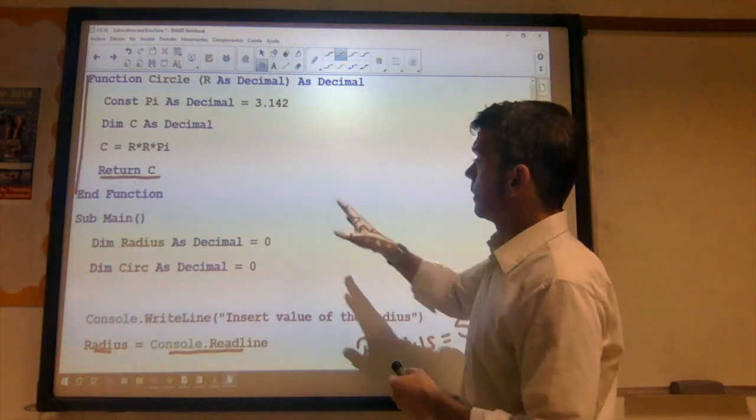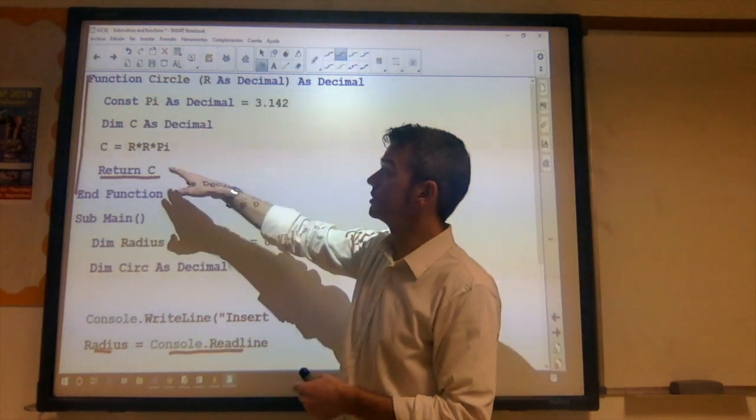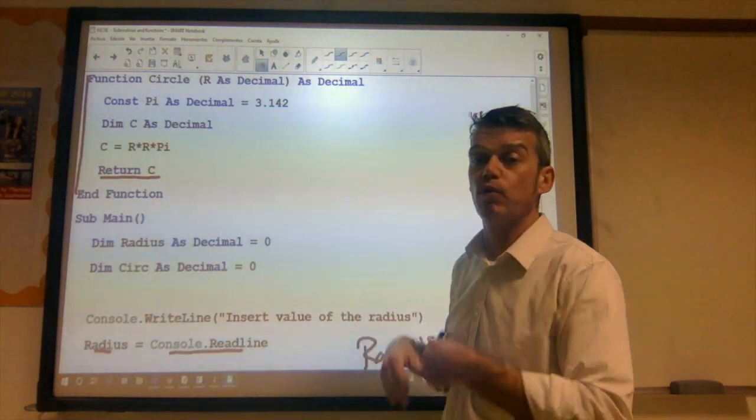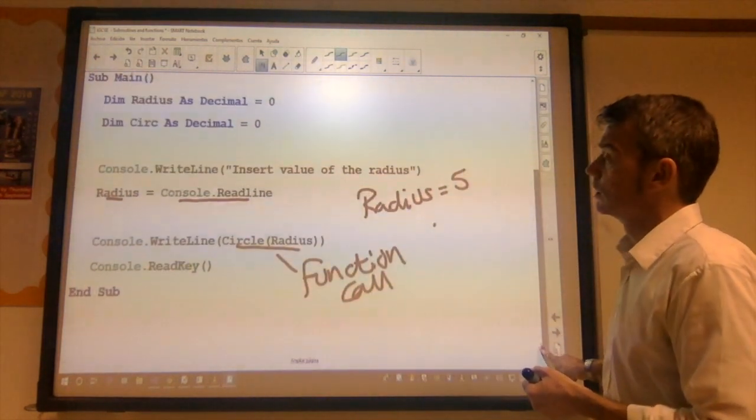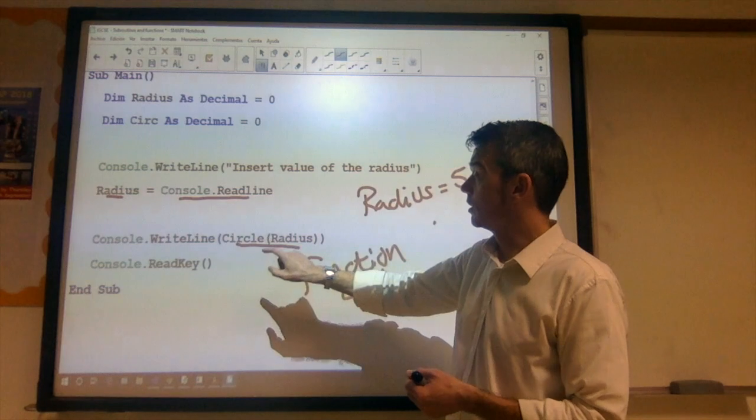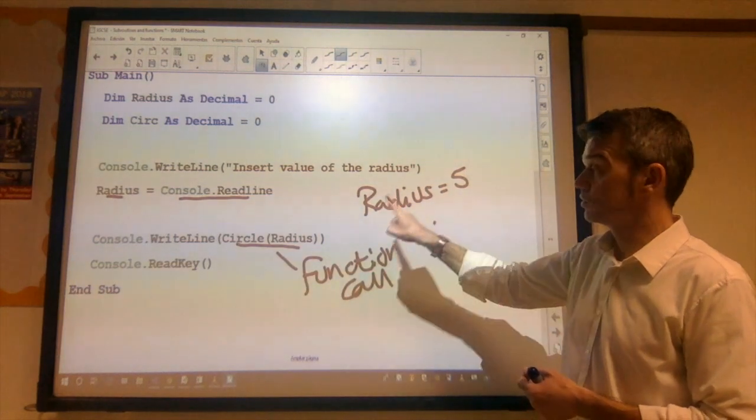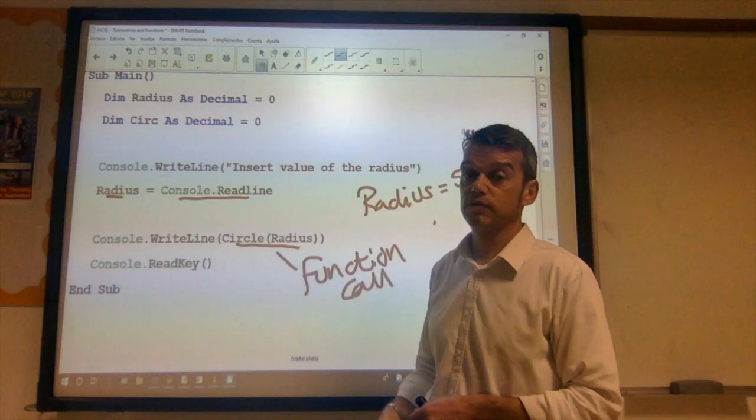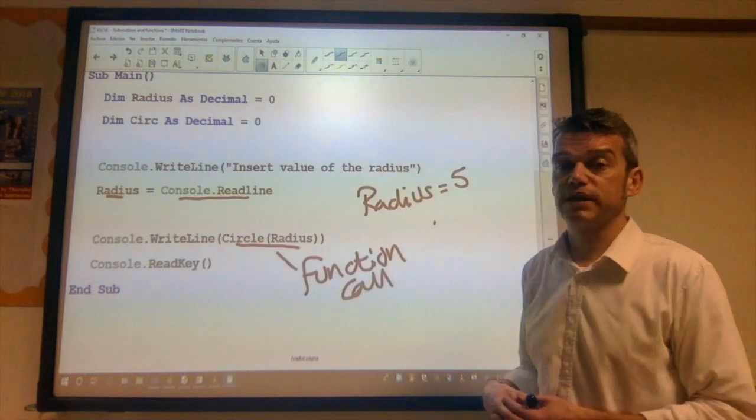Okay. So r has taken the value 5. Pi is 3.142. We multiply those together. We store it in c. We return c to wherever the function was called from. To the function call. Which is back down here. So what will be output is the result of calculating the area of the circle using the value that is stored in the radius which was 5. And it will output that to the console.